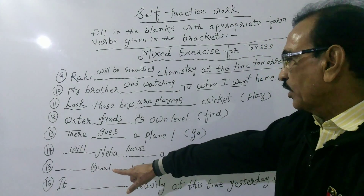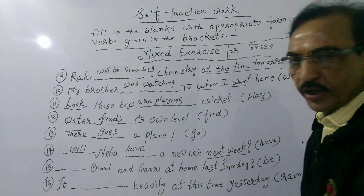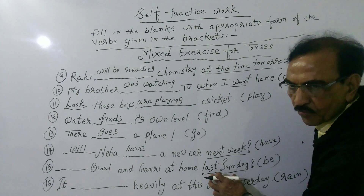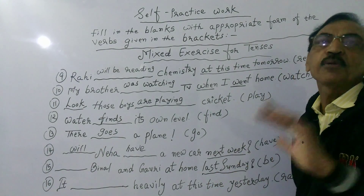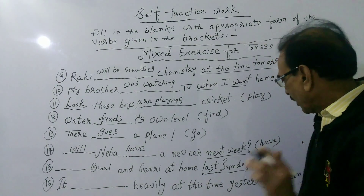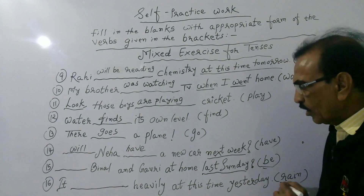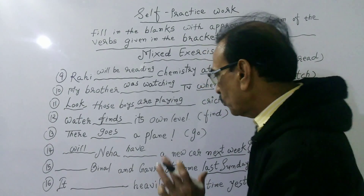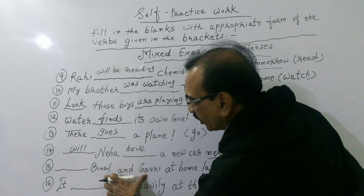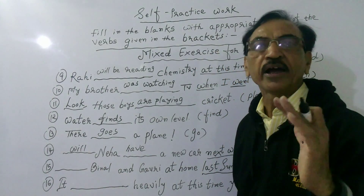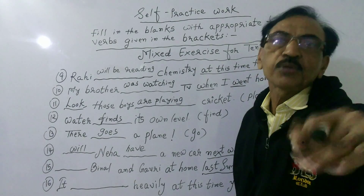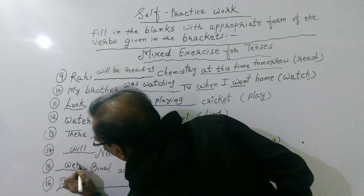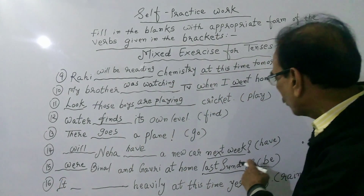Next sentence: Dash Vinal and Gowri at home last Sunday? 'Last Sunday' is the keyword identifying simple past tense. The verb 'be' is given in brackets, and its past tense forms are 'was' and 'were'. The subject is 'Vinal and Gowri' — when two singular nouns are joined by 'and', the subject is plural. So we use 'were'. The answer is: Were Vinal and Gowri at home last Sunday?